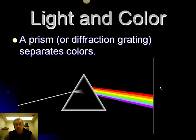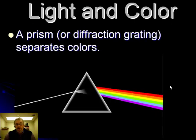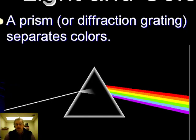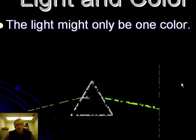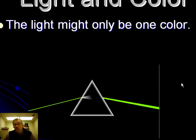If we see colored light, there are three explanations. The first is that a prism or a diffraction grating separates the colors artificially and allows us to see individual colors. Another explanation might be that the source of the light is only producing one color — rather than adding up colors, we're just seeing the only color that's available, or maybe a limited set of colors.